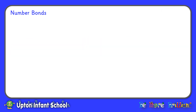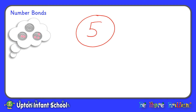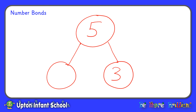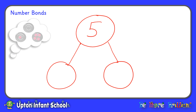Welcome back. Now we've had a good investigation using our buttons and using the Lego. I'm now going to have a go at showing this using numbers. So first of all I had my five counters and I split them up into a group of two and a group of three — two and three makes five. I also split my five into a group of one and a group of four. One and four makes five. One and four are number bonds for five.